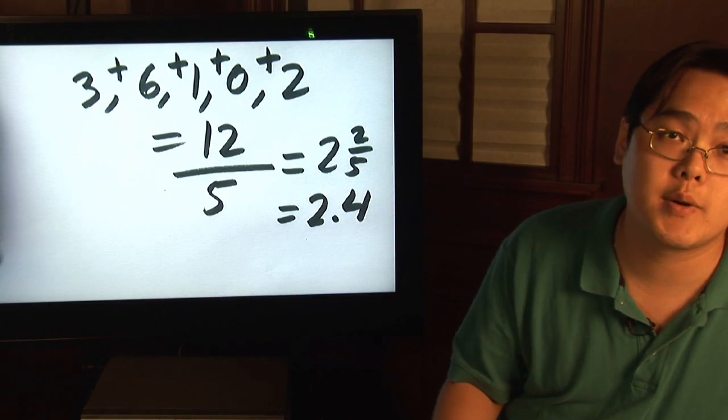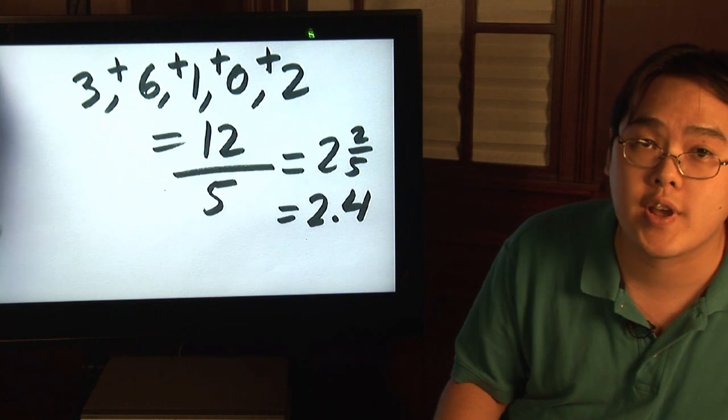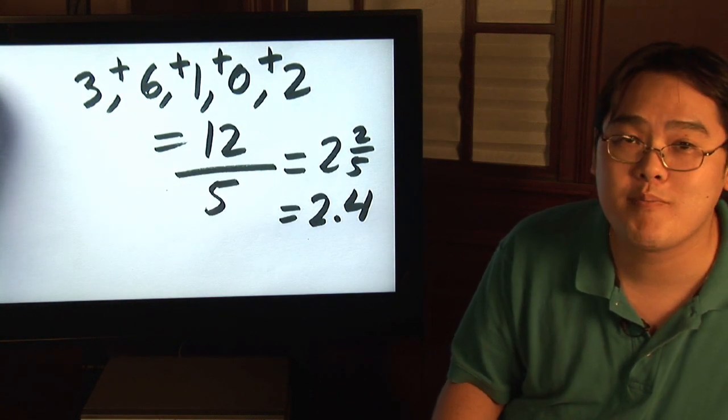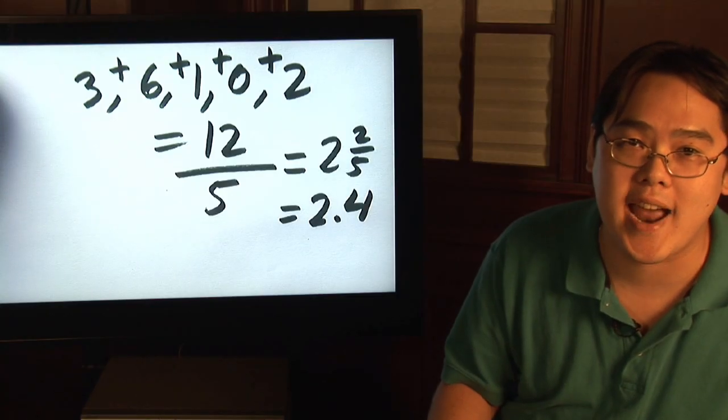Basically, you can do that with any set of numbers you want. As long as you know how many figures you have, all you need to do is add them up and divide by the number of figures. So I'm Jimmy Chang, and that is how you calculate an average.